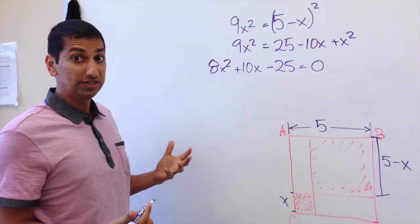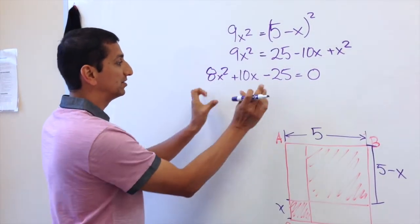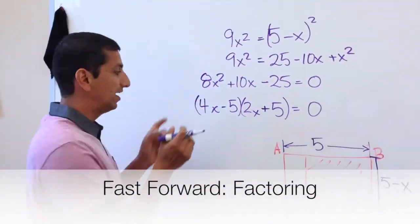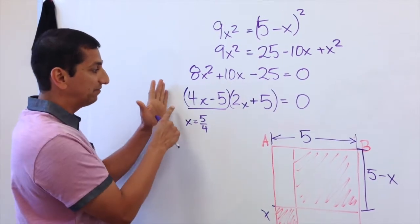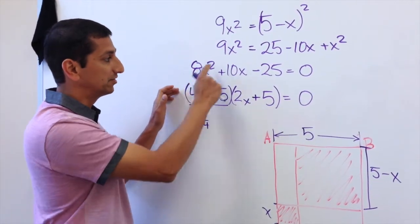Back to this point, if we weren't going to use the quadratic formula, then we need to figure out how to factor this into two binomial terms. So that's the other way to get the solution. But you have to stumble upon how to factor this equation.